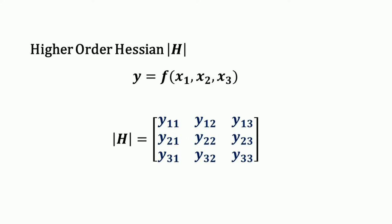Once we get the critical values, the next step is to find the second order condition for checking whether the given function is to be maximized or minimized, on the basis of the higher order Hessian. Since y is a function of x1, x2, x3 — three variables — we have the third order Hessian.